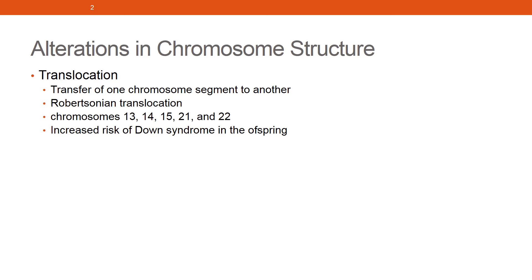On the other hand, the offspring of such an individual can have monosomies and trisomies. A common Robertsonian translocation involves the fusion of the arms of chromosomes 21 and 14. When a baby is born from someone who carries this, the baby can receive an extra copy of the long arm of chromosome 21, resulting in Down syndrome. Robertsonian translocations are responsible for a significant number of such cases.